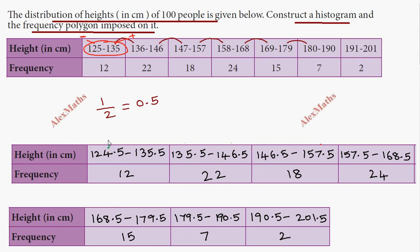Now, in the class interval, the gap is 135.5 minus 124.5, which is 11 units. Similarly, 146.5 minus 135.5 is also 11 units. So the class width is consistently 11 units throughout all the class intervals.